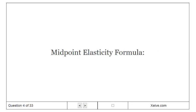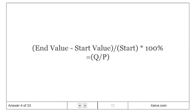Midpoint elasticity formula: asterisk times 100% equals the percentage change calculated using midpoint averages for both quantity and price.